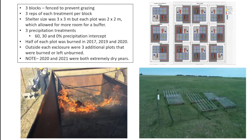We used three drought treatments with rain intercept shelters — transparent plexiglass gutters that intercept varying amounts of rainfall. We had an ambient treatment at zero percent interception, a 30 percent interception treatment, and a 60 percent interception treatment. Each plot was then split — half burned and half unburned — using a fire box to accomplish that.